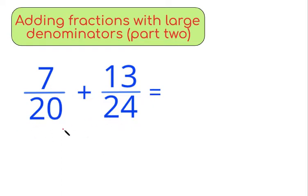So let's get into this question: 7 divided by 20 plus 13 divided by 24. Now, as we did in the previous video, what we have to do is start off by finding the factor tree for both of these denominators, 20 and 24.